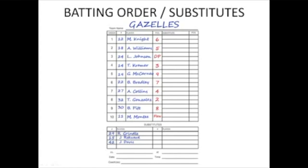Basically, the flex doesn't bat. The only place in the batting order that either the DP or the flex can bat is the place the DP occupied at the beginning of the game. In a normal substitution, one player leaves the game and one player enters. However, swapping the DP and flex for each other is a half substitution — only one member of the pair officially leaves the game or officially re-enters the game.